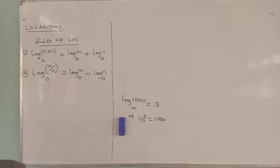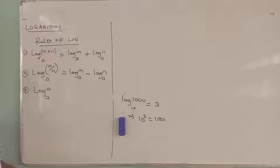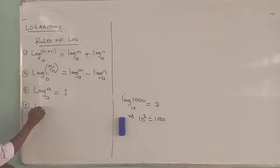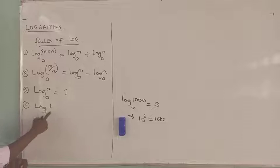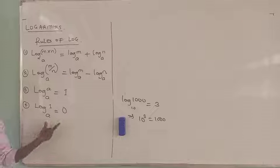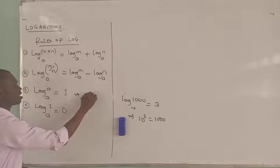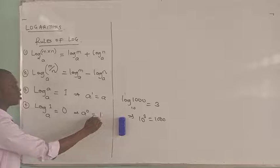The third rule: the logarithm of a number to the same base — if you have log A to base A, that is going to give you 1. And then the fourth one: the logarithm of 1 to any base at all — when you have the log of 1 to any base, say base A, this is the same thing as zero. You can see that A raised to the power of 1 is equal to A, and whenever you raise a number to the power of 0, you will always get 1.